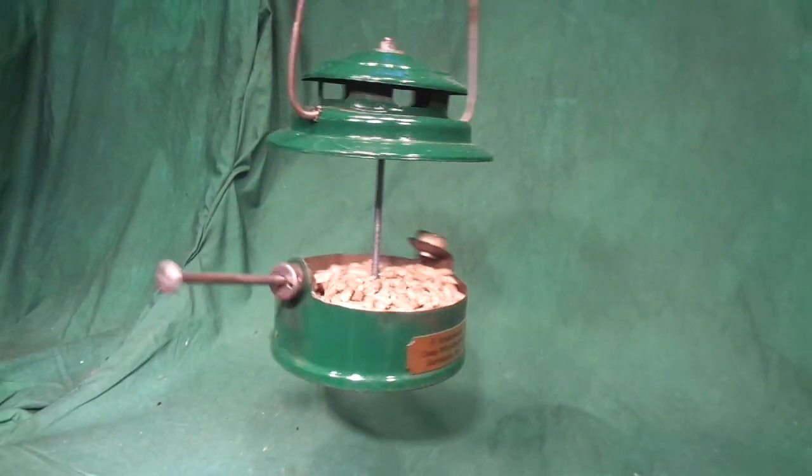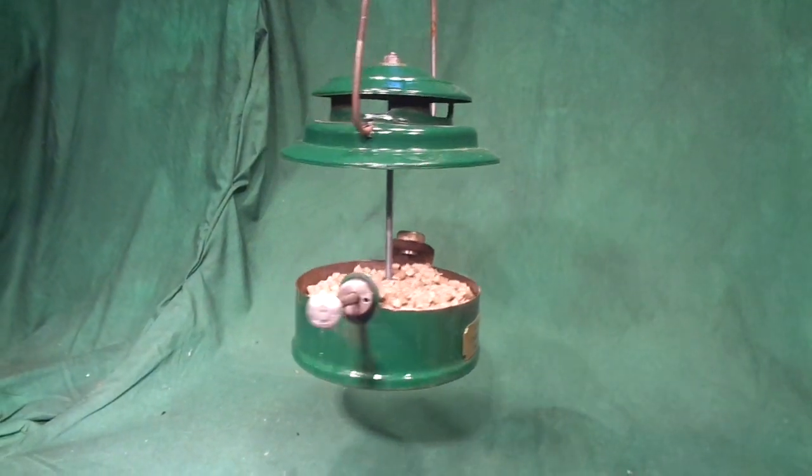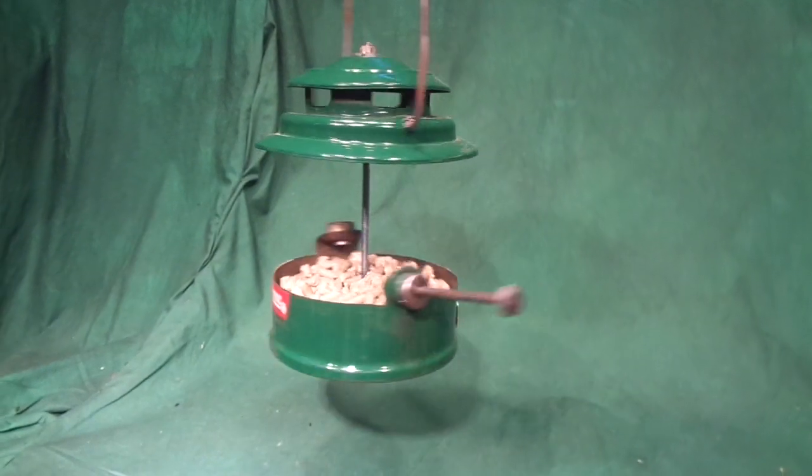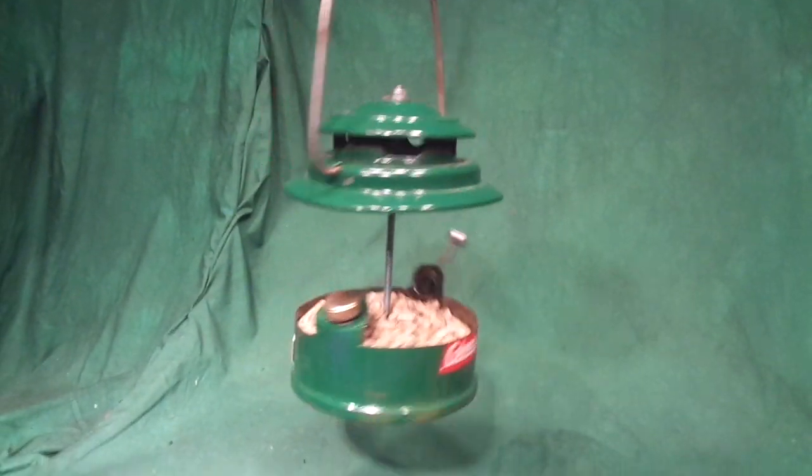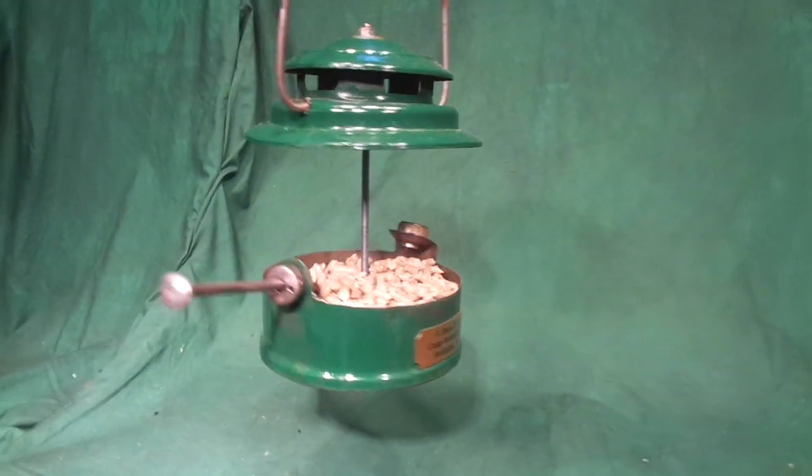And here it is - a Coleman lantern bird feeder. The perch is the pump handle. Most of these lanterns were so rusty they didn't look very good, so I gave them a shot of hunter green Rust-Oleum to spruce them up.